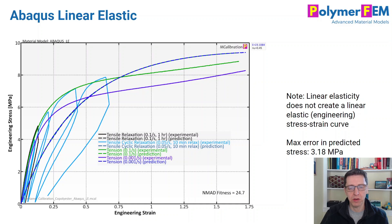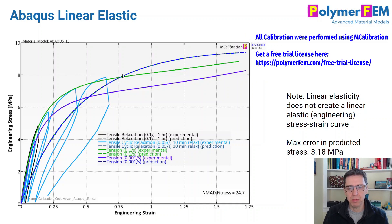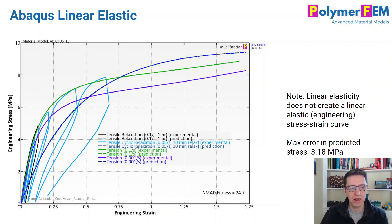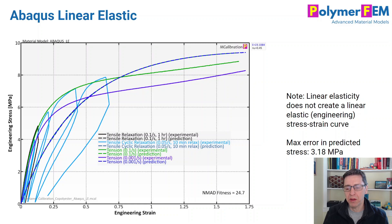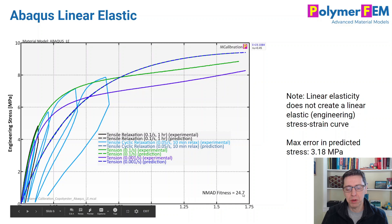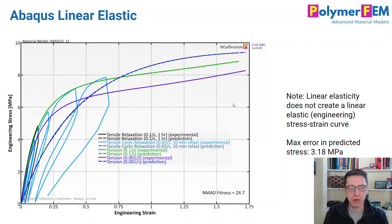Just for completeness, here are three of them. Starting with a linear elastic material model — the predictions are shown in dashed lines and the other curves are the experimental data. Note that linear elasticity does not give a straight line when plotted as engineering stress vs. engineering strain. The maximum error at any point is 3.18 MPa, and stress levels go from six to eight, so that's roughly 50% error at maximum. The NMAD fitness — the average error of all prediction points — is 24%. Not very good.